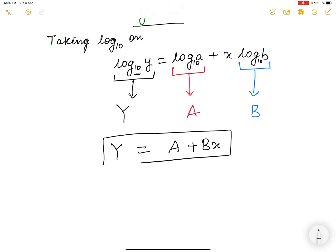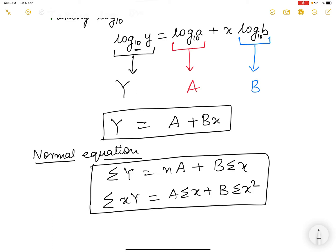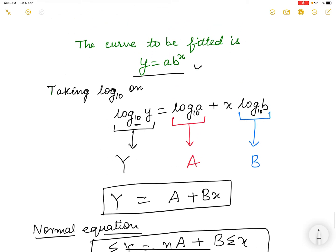In this way, it reduces to the equation of a straight line and we know the normal equation of a straight line. What is the normal equation? Normal equation of a straight line is sigma capital Y equals NA plus B sigma x. Multiply it with x and take summation on both the side. Sigma xY equals A sigma x plus B sigma x squared. So this will be the normal equation for this particular ab to the power x to be fitted.